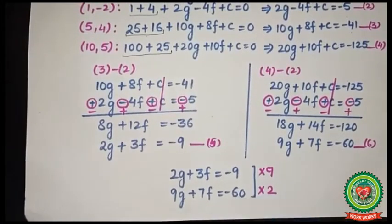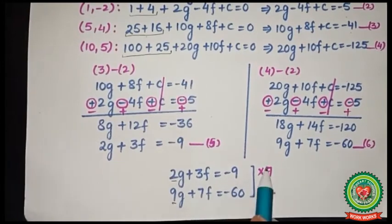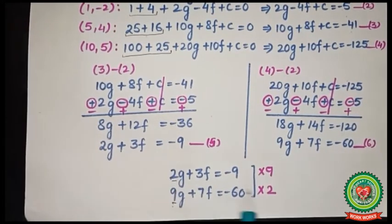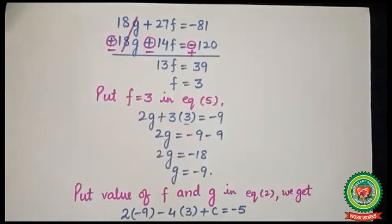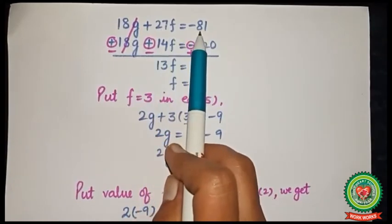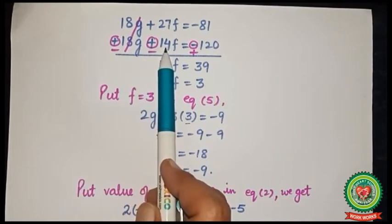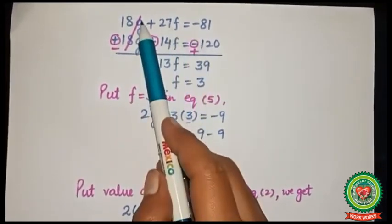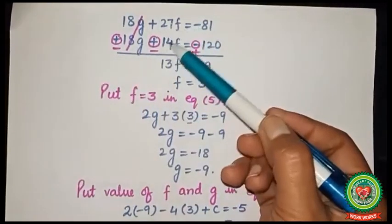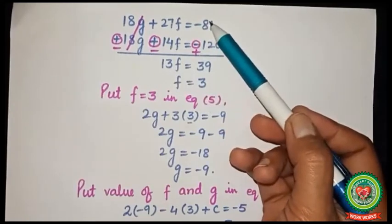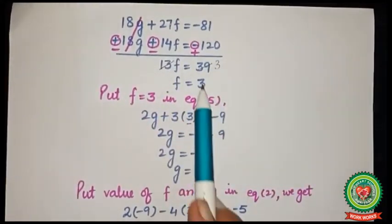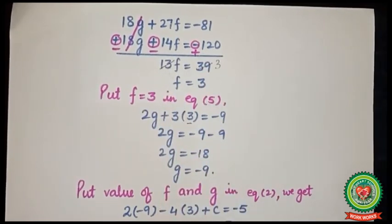To make the coefficient of g equal, multiply equation 5 by 9 and equation 6 by 2, giving 18g + 27f = -81 and 18g + 14f = -120. Subtracting, 18g cancels and we get 13f = -81 + 120 = 39, so f = 3.